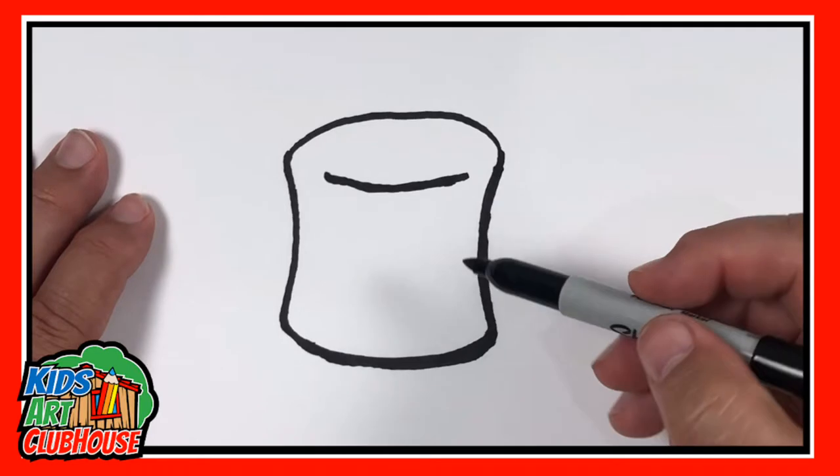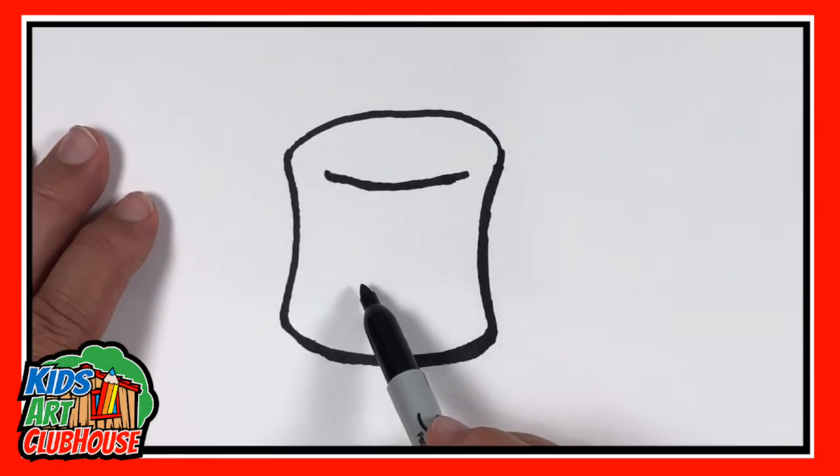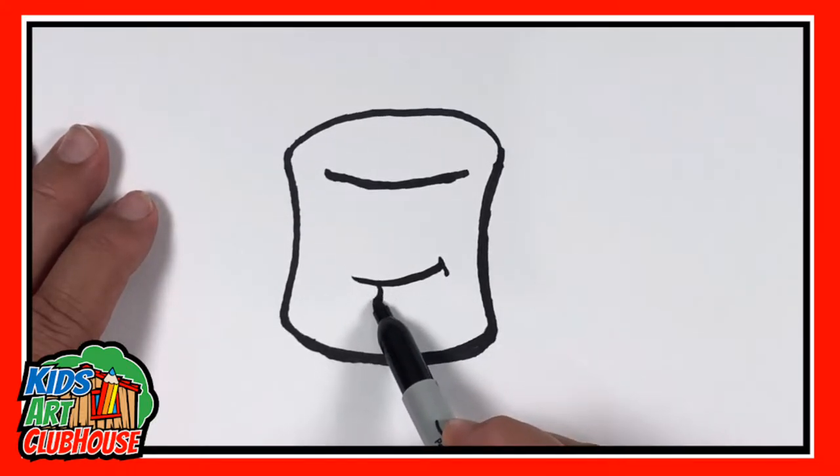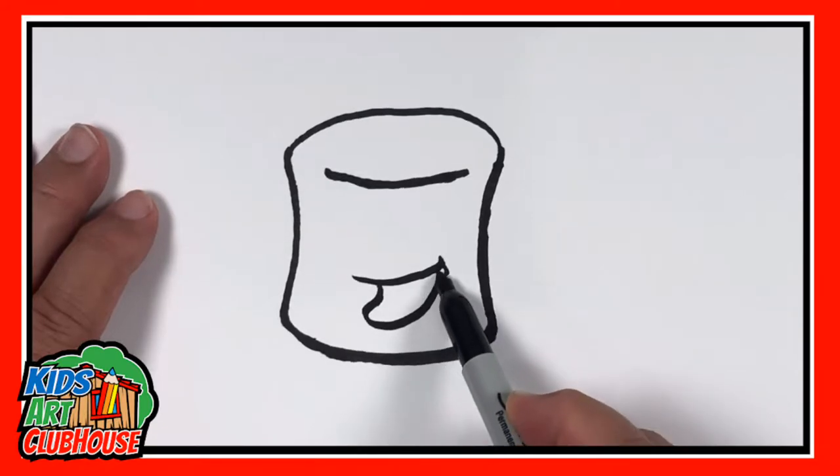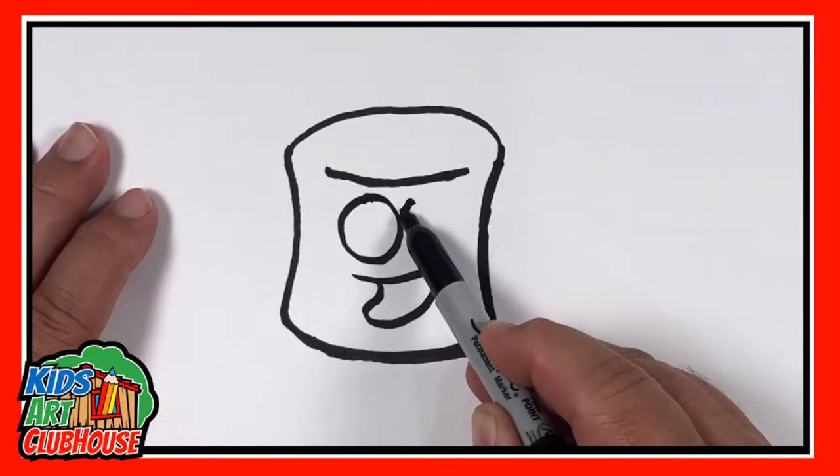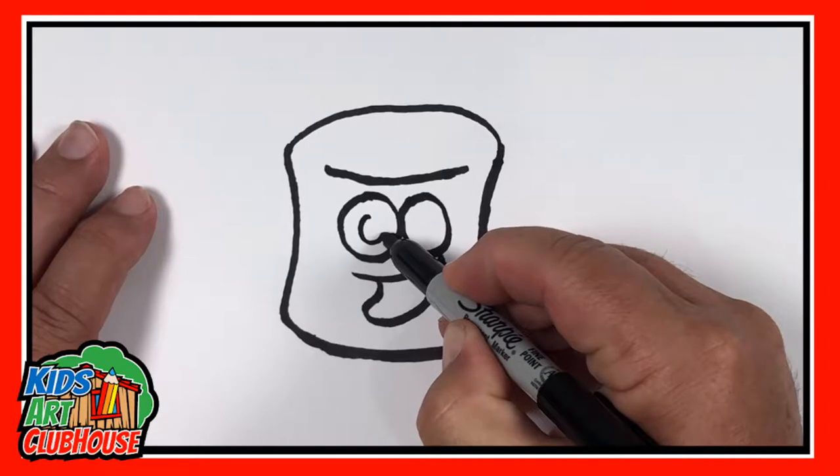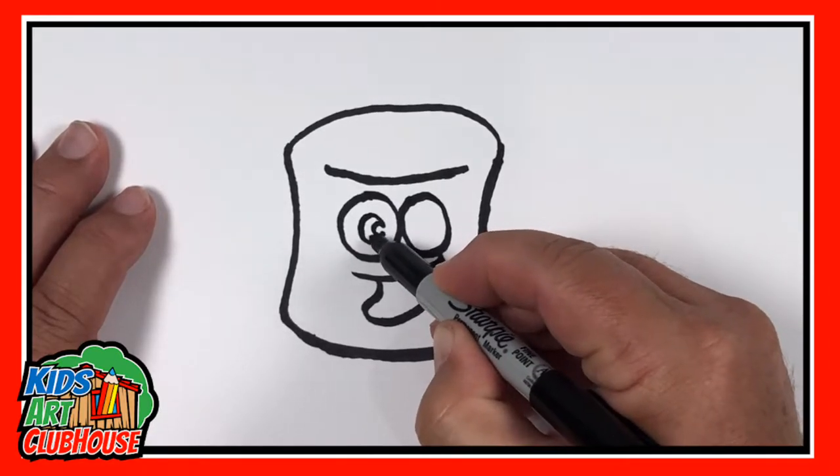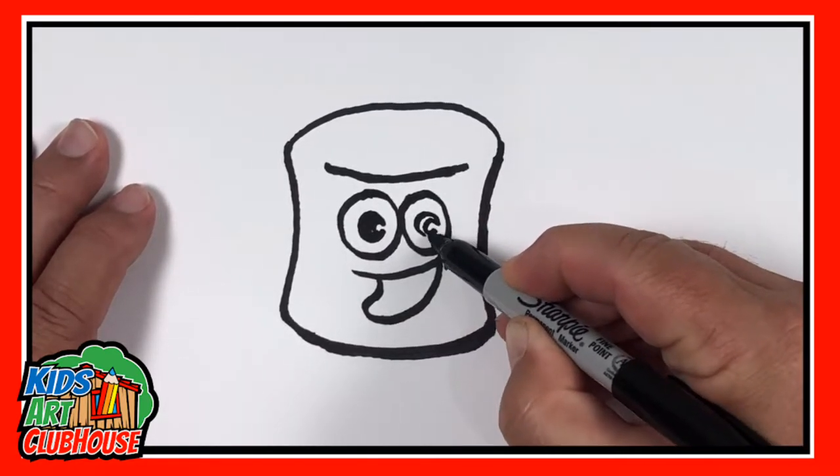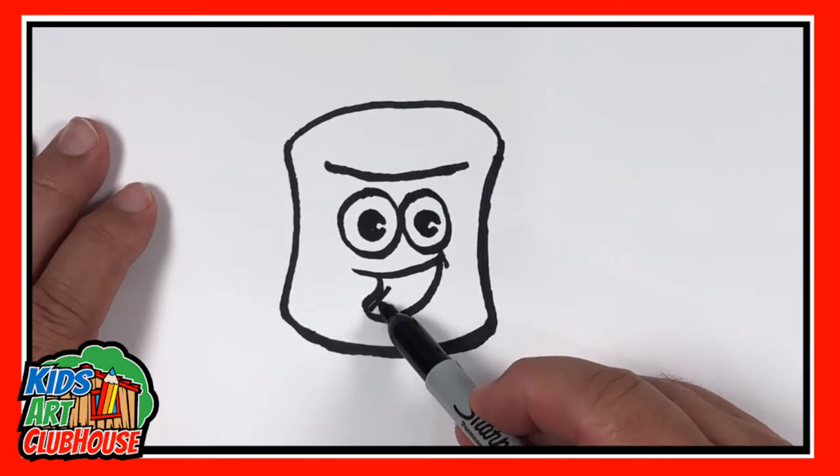That right there could be our simple marshmallow. If we wanted to make it a cute marshmallow or a fun marshmallow, we could add a face to it, really any type of face. Let's say he's a really happy marshmallow. We're gonna add a big smile with some big eyes.